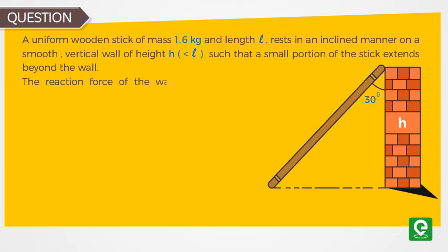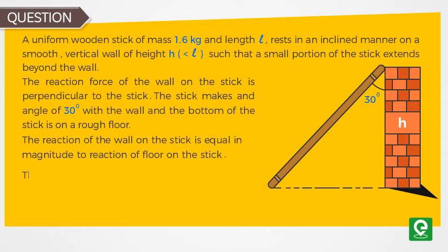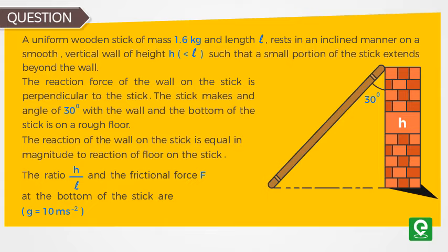The reaction force of the wall on the stick is perpendicular to the stick. The stick makes an angle of 30 degrees with the wall, and the bottom of the stick is on a rough floor. The reaction of the wall on the stick is equal in magnitude to the reaction of the floor on the stick. Find the ratio h by l and the frictional force F at the bottom of the stick. Acceleration due to gravity is equal to 10 meters per second squared.